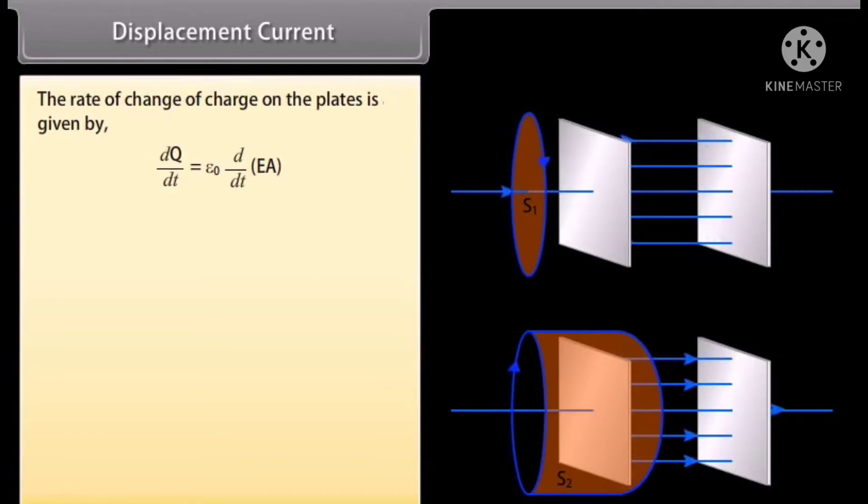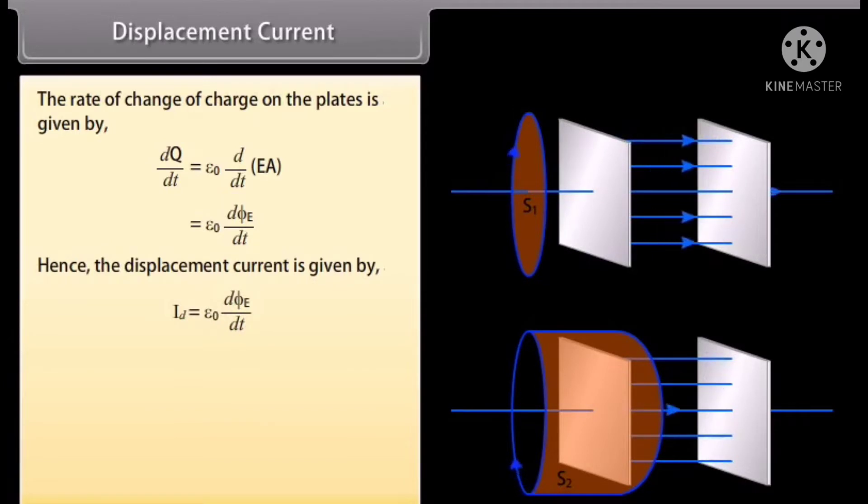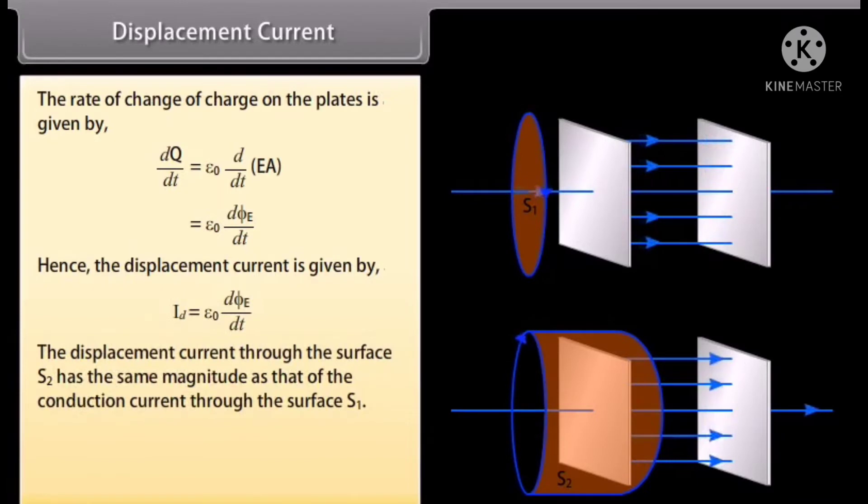This means for the surface S1, closed integral of B dot DL is equal to mu_0 I. But for the surface S2 through which no current flows, closed integral of B dot DL is equal to 0. It means there is an inconsistency. There must be a current associated with the changing electric field in the non-conductor between the capacitor plates. The rate of change of charge on the plates is given by epsilon_0 D upon DT of EA, which is equal to epsilon_0 D phi_E by DT.